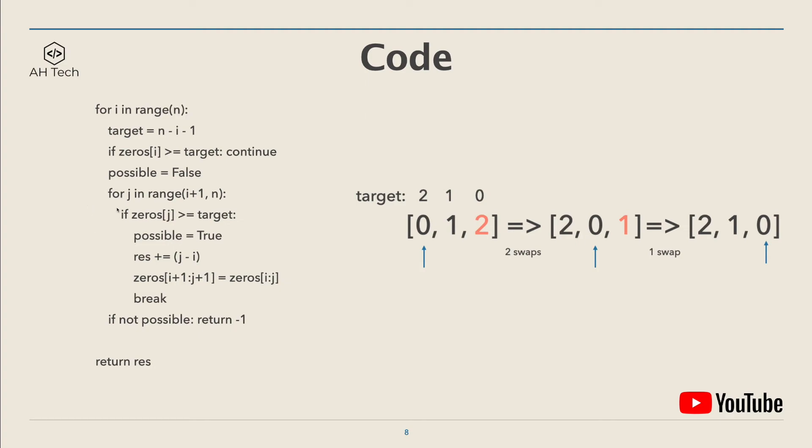Here we have an inner loop that will search the rest of the array. Once we find an element which is bigger or equal to target, we will set the possible flag to true. And then the number of swaps we have to make is j minus i, and we will add that into the result variable. And here is the trickiest part in the code.